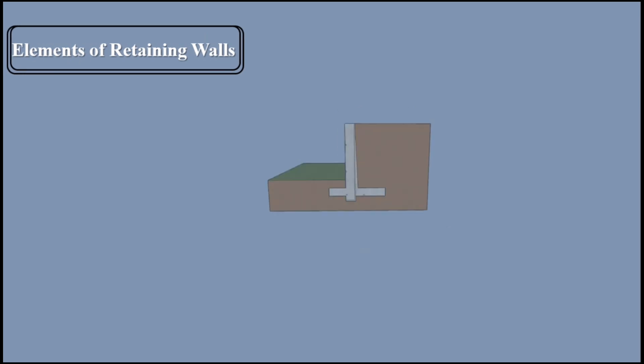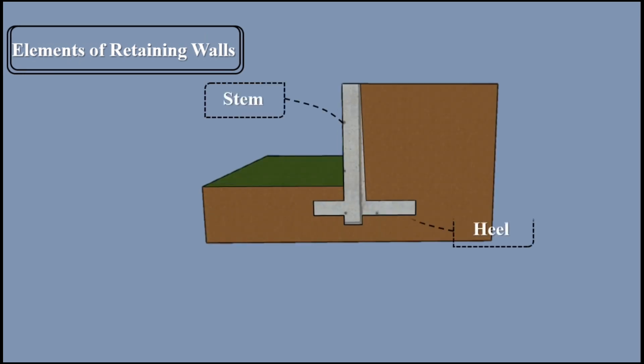Elements of retaining walls: Each retaining wall is divided into three parts - stem, heel, and toe. The heel and toe slab make up the foundation of the wall. Some walls have a key provided in the footing to prevent it from sliding.